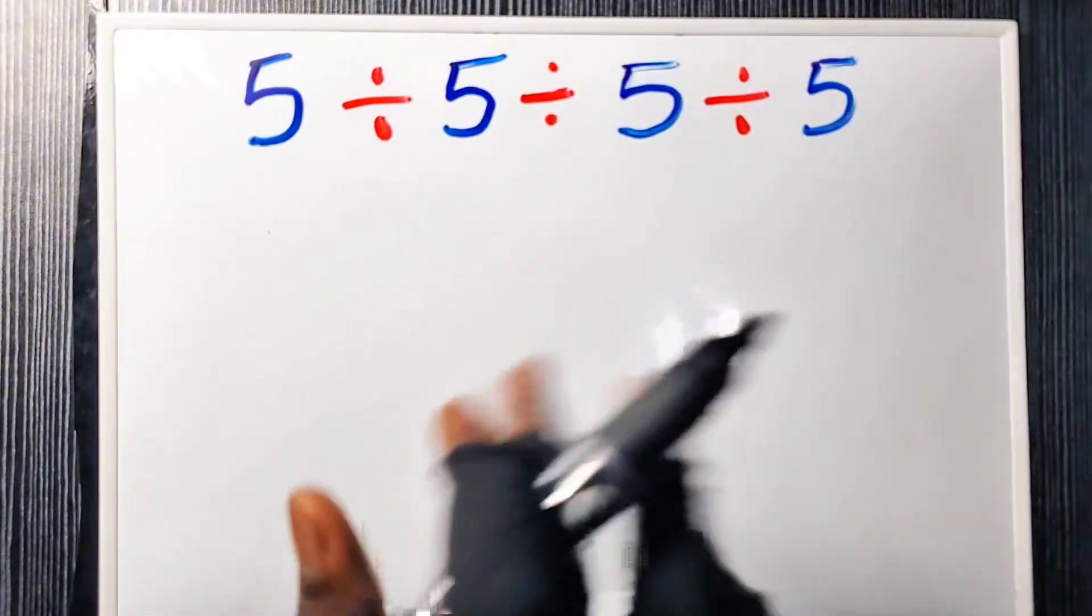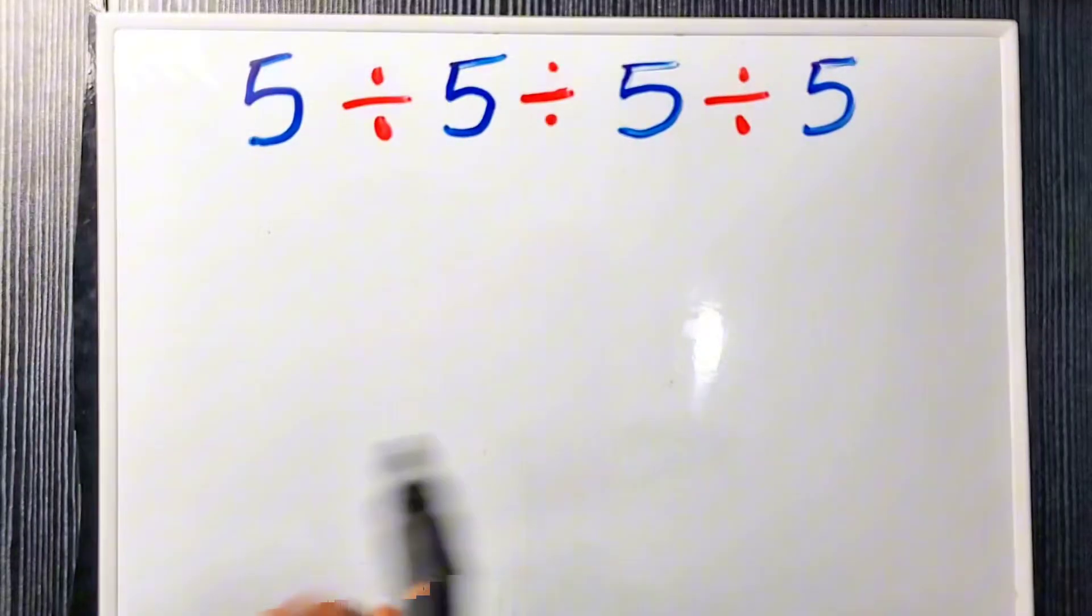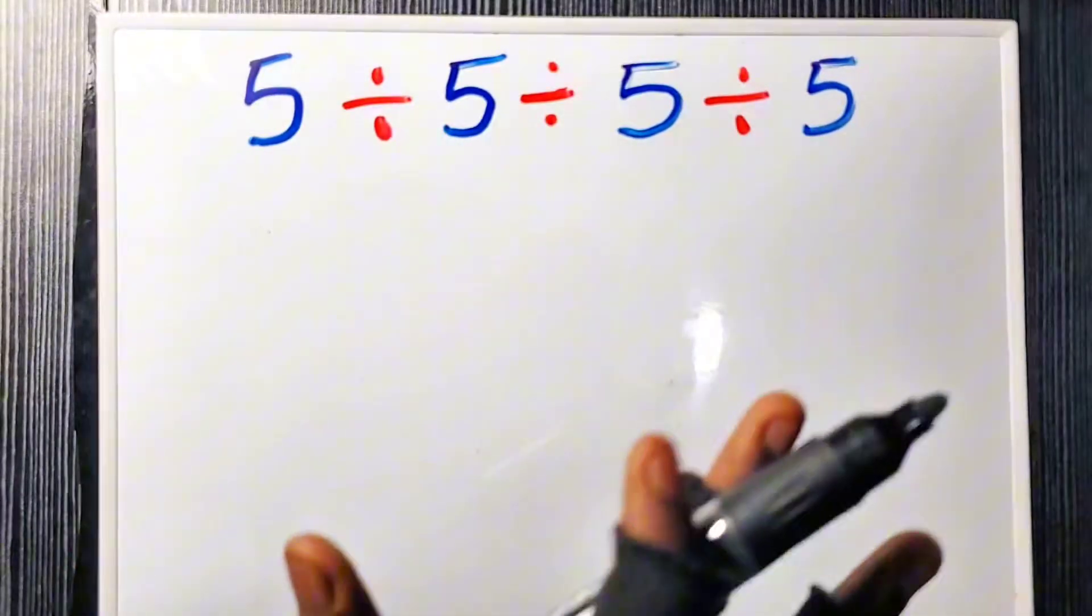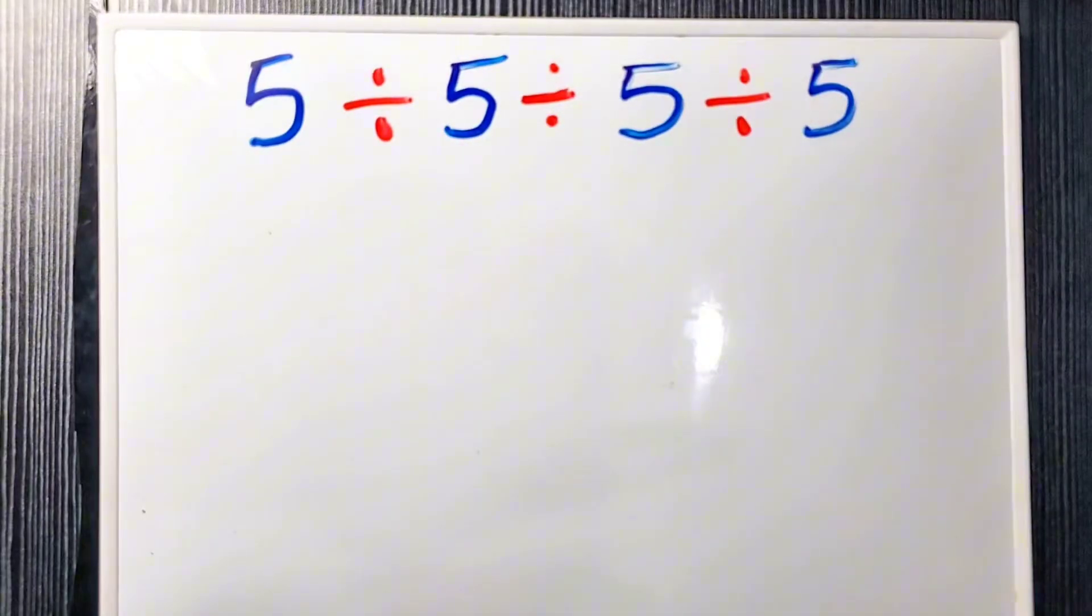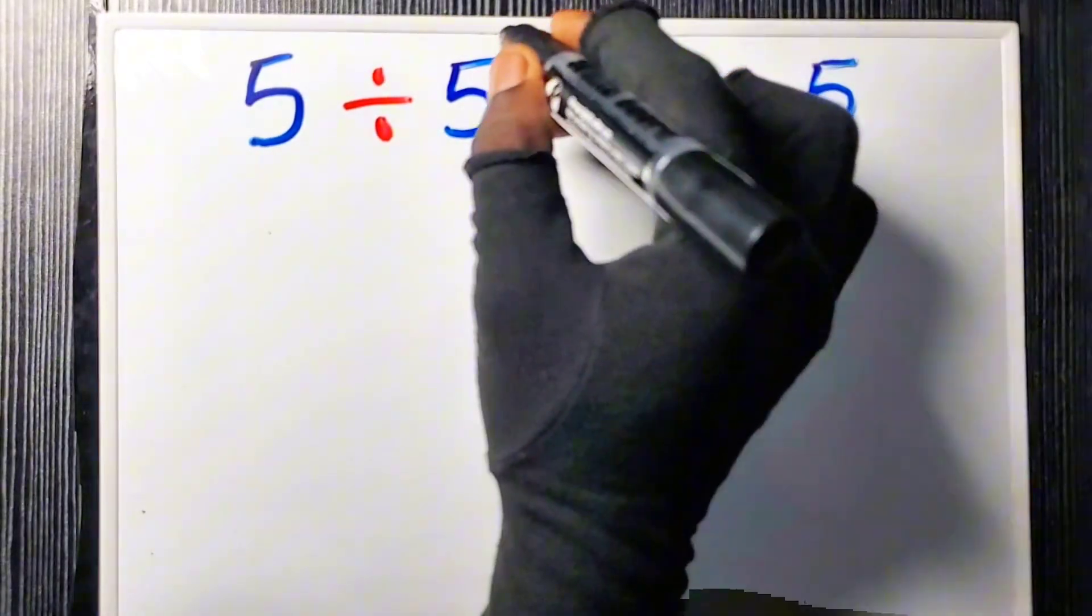But mathematics doesn't care about your brain. If you type this into a modern calculator, you will get 0.04. Your brain wants to organize the chaos like this.